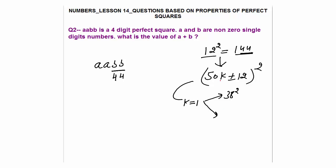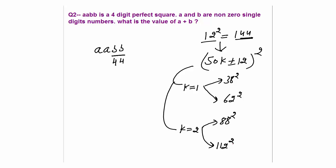Now, perfect squares with last two digits 44 follow the pattern (50k ± 12)². With k=1: 38 squared and 62 squared. Checking: 38² = 1444 — last two digits are 44 but first two digits (14) are not the same. 62² = 3844 — last two digits are 44 but first two digits (38) are not the same.